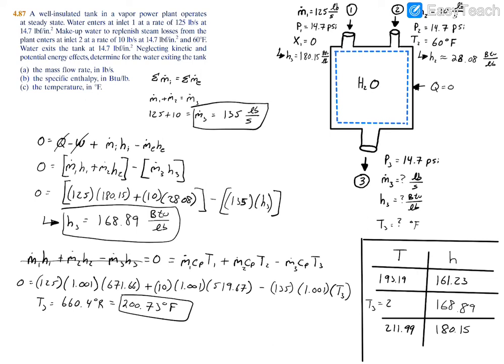If you interpolate, you'll have about 200.8 degrees Fahrenheit, which is your T3. This is just about equal to the value we had from using the energy balance principle.